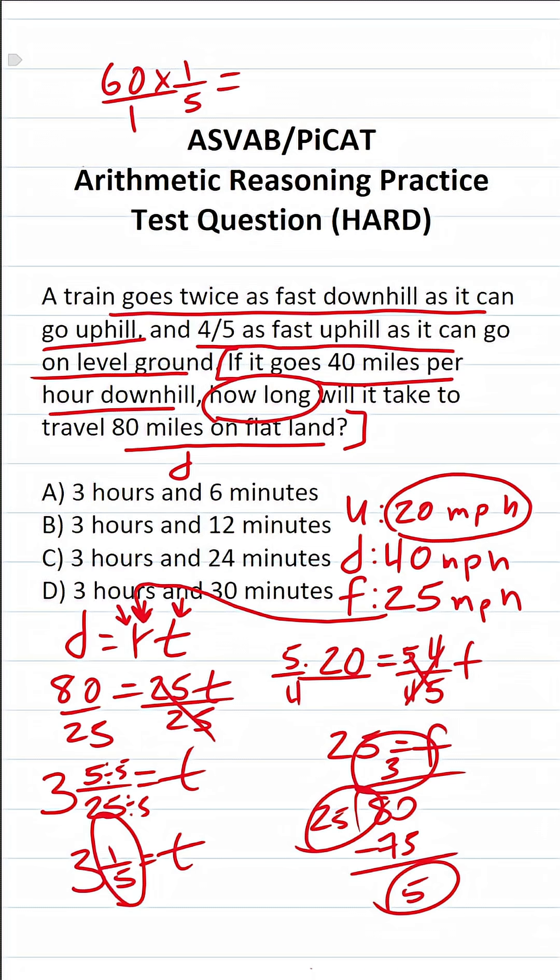We can write 60 as a fraction by placing it over 1. Multiply straight across. This becomes 60 over 5, which is 12. So 1 fifth of an hour is the same thing as 12 minutes. So it's going to take 3 hours and 12 minutes for this train to go those 80 miles. So the answer to this one is B.